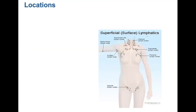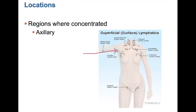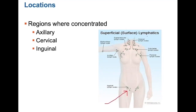Lymph nodes are found throughout your body, but there are three regions where they are concentrated. The axillary region, or armpit, receives lymph from the upper appendages and the breast. The cervical region, within the neck, receives lymph from the head region and the neck. And the inguinal region receives lymph from the lower appendages, the legs.